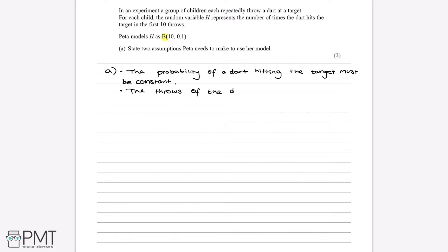We have to assume each throw doesn't affect the others - that's our second reason. Now we've given two reasons as asked, getting us both marks. The mark scheme is quite specific: for the first point about probability being constant, we must use the word 'probability' (or equivalent like chance or possibility) and the word 'constant', 'fixed', or 'same'. For the second mark about independence, we need to use the word 'throws' - not 'trials' - showing the answer is in context.